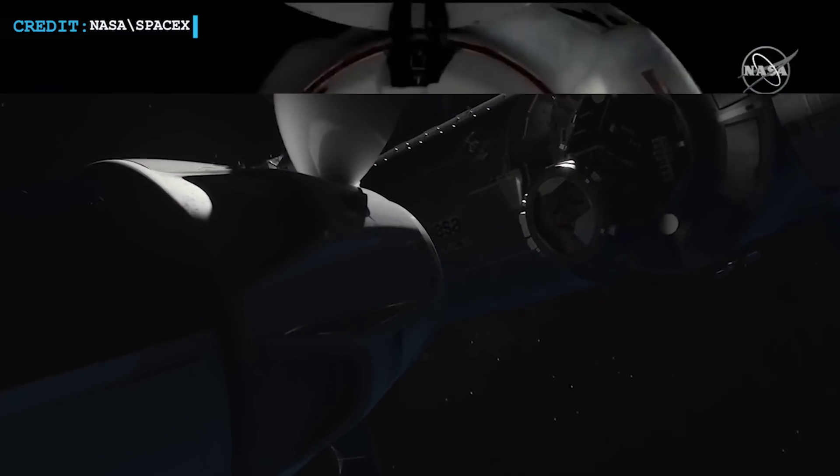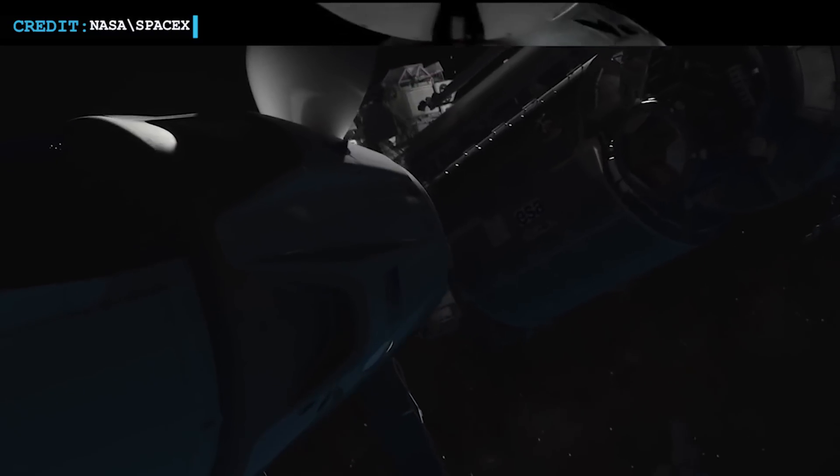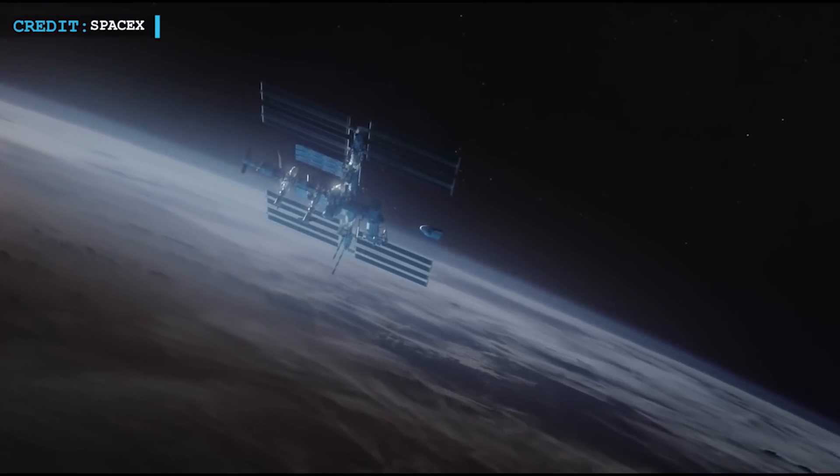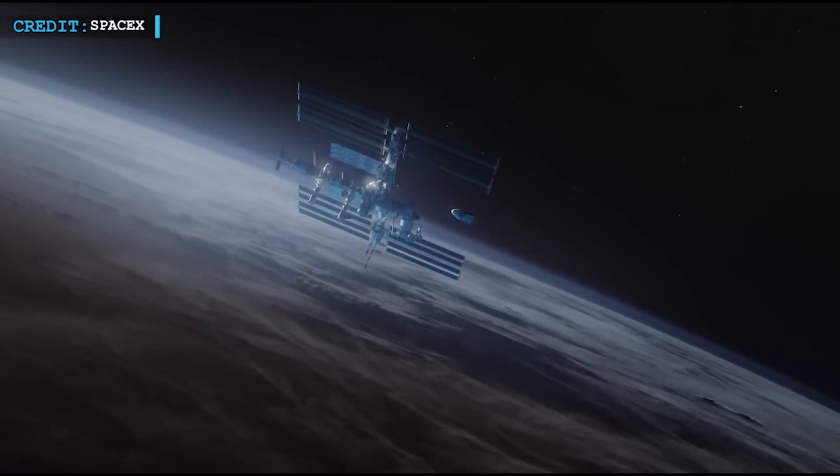The unmanned Dragon supply ship separated from the International Space Station, and both spacecraft were traveling 259 miles above the South Pacific Ocean off the coast of Hawaii.